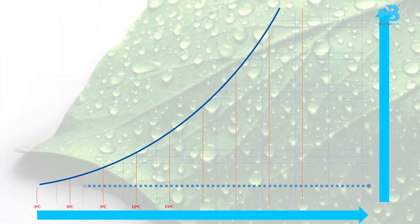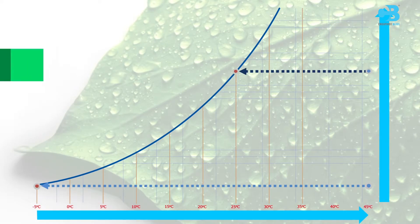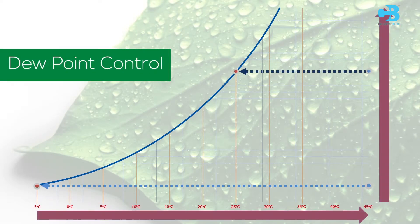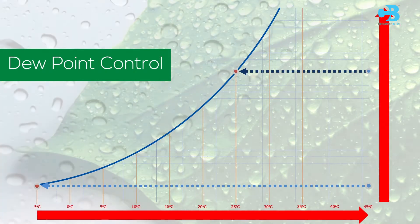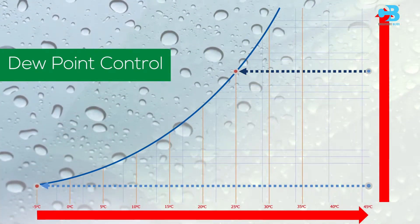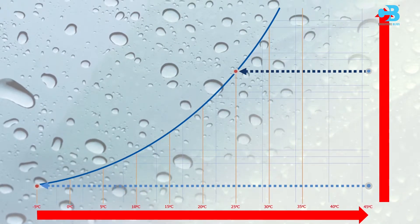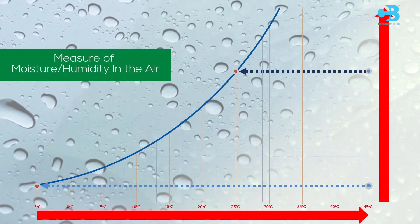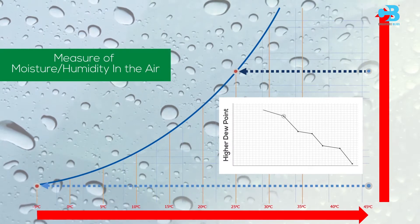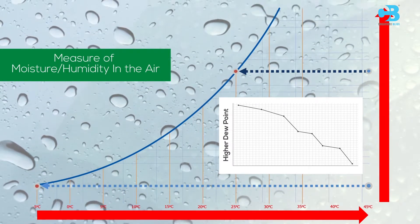Ecotronic System works on the principle of dew point control. Dew point refers to the temperature at which water vapors in the air start condensing to form dew. It gives a measure of moisture and humidity in the air. In general, a higher dew point indicates more atmospheric moisture.